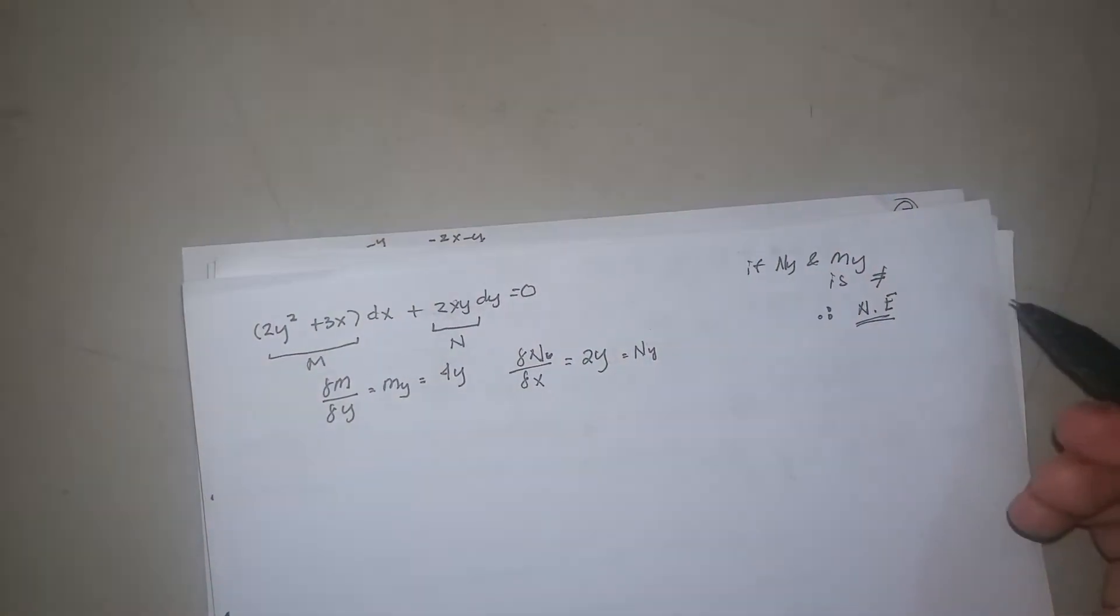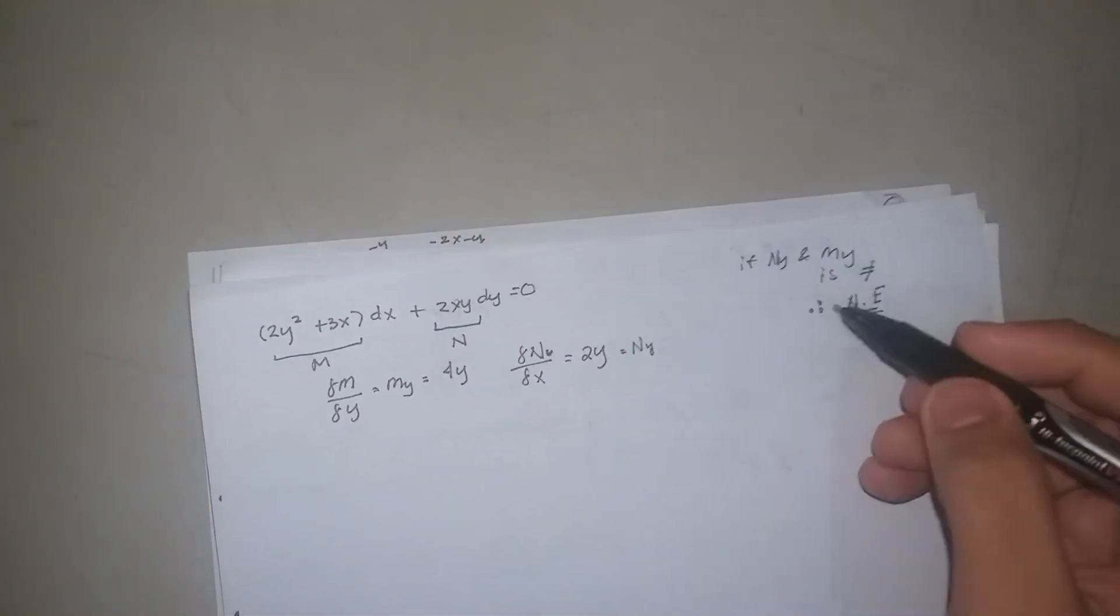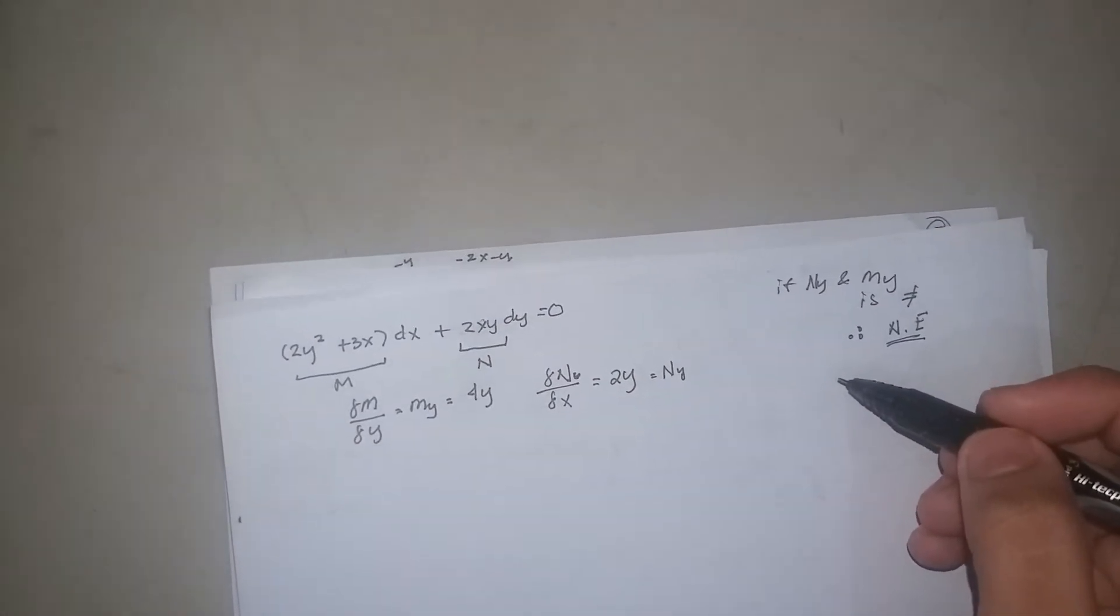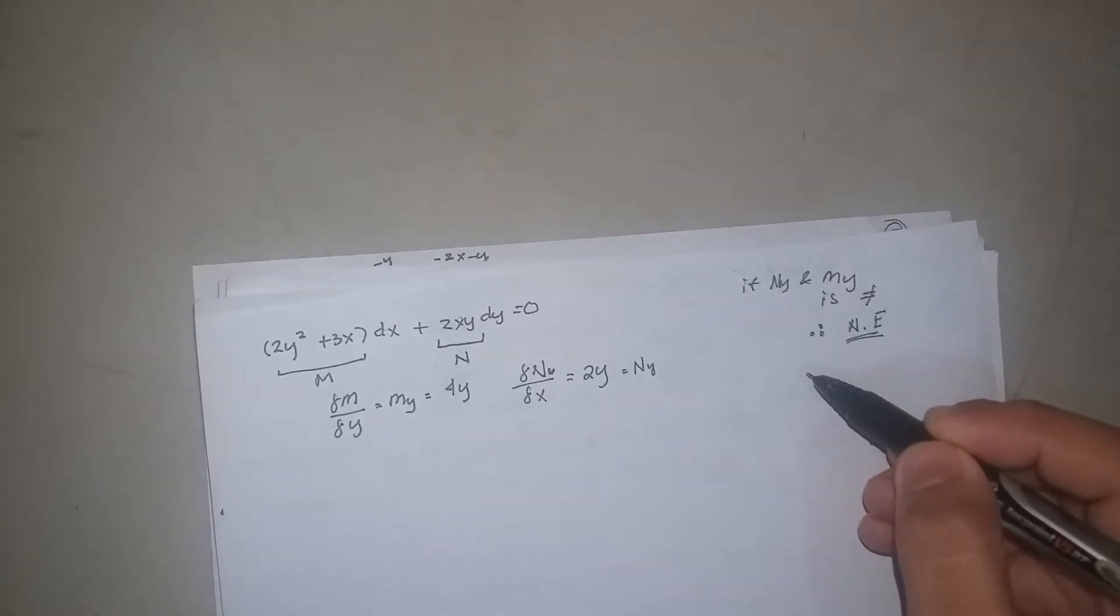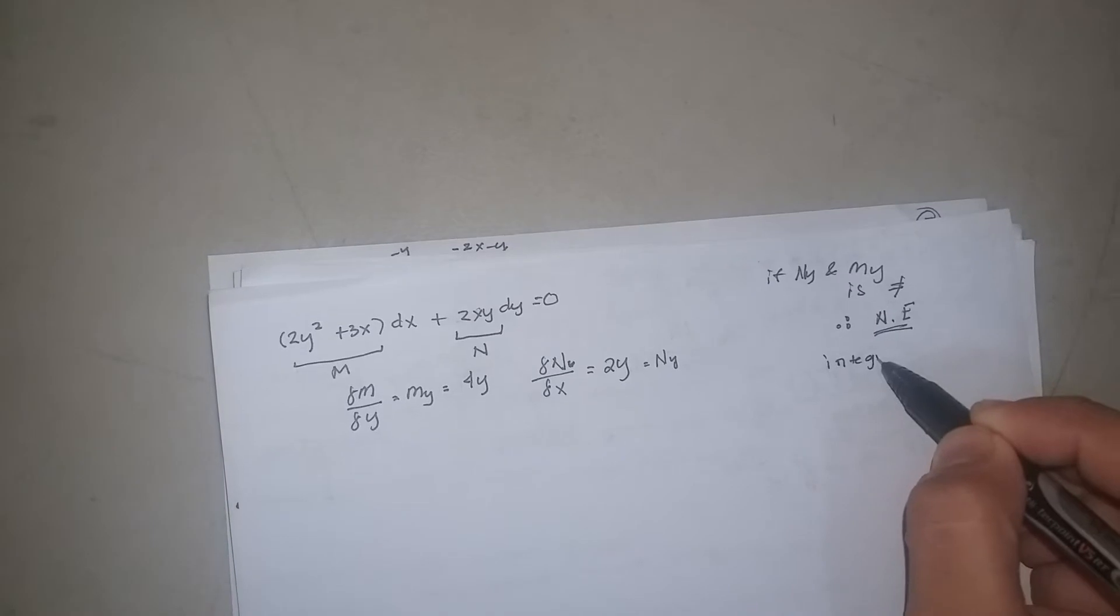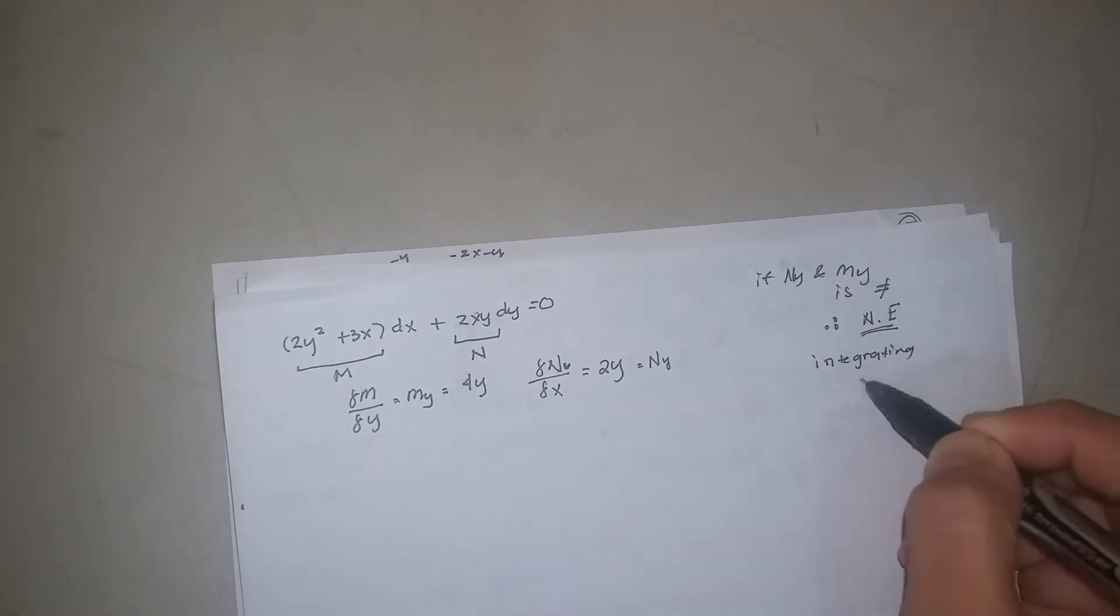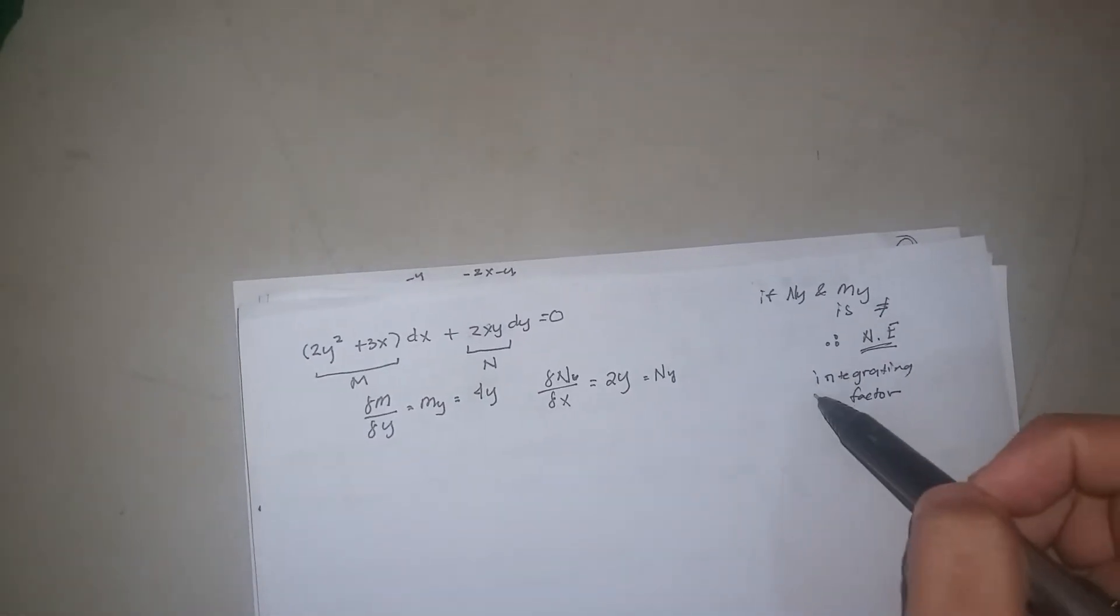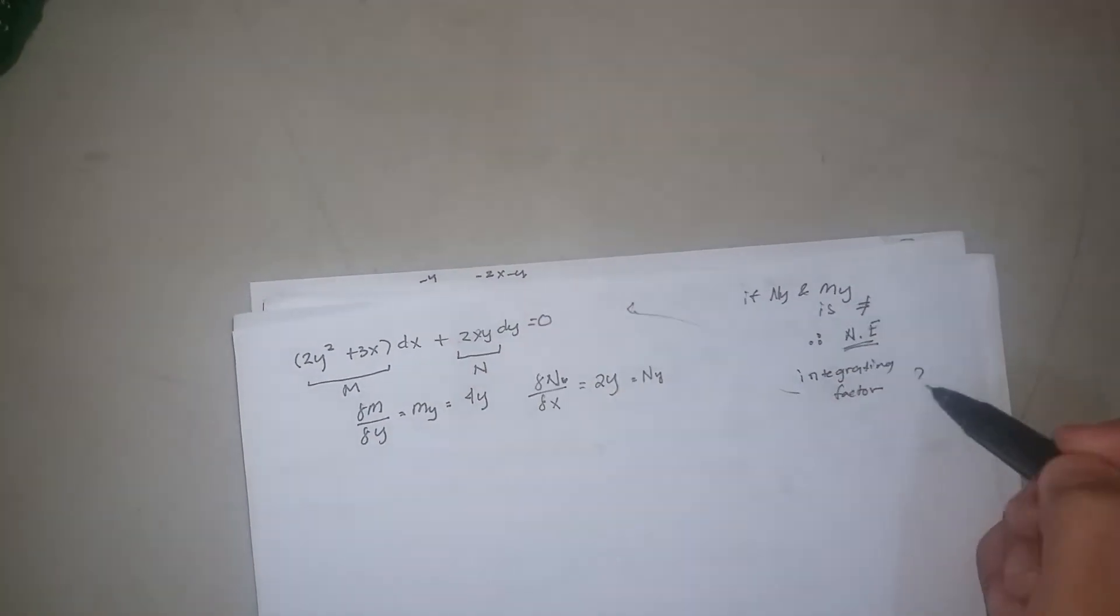Then how to make it exact? You're gonna make it exact by getting the integrating factor, the integrating factor that is being multiplied to the whole equation.